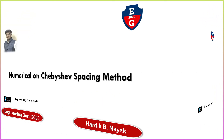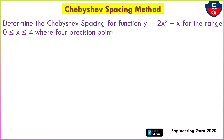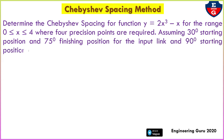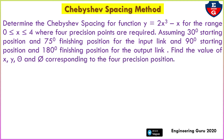Now let's see the Chebyshev's Spacing Method numerical. Determine the Chebyshev's function y equal to 2x³ minus x, for the range 0 to 4. Four precision points are required. Assuming input link angle 30 and 75, and output starting and finishing angle 90 and 180. Find the value of x, y, theta, and phi corresponding to the 4 precision points.